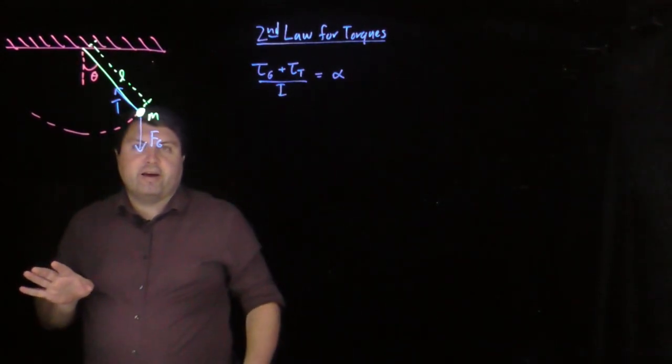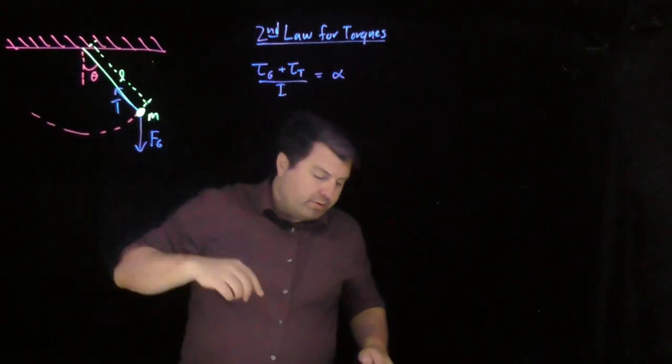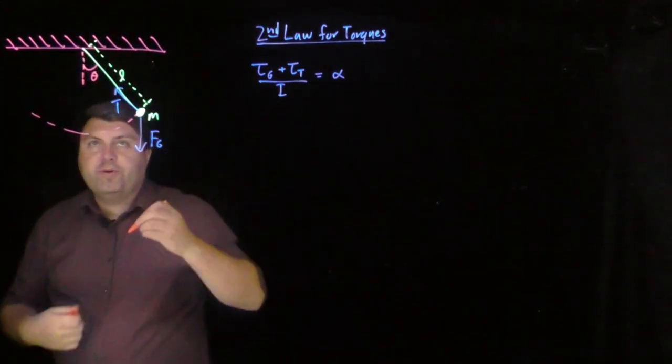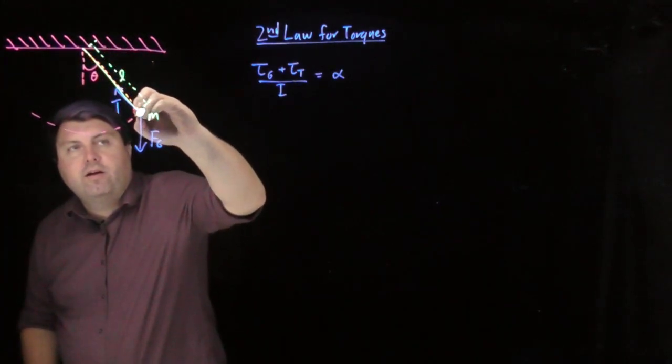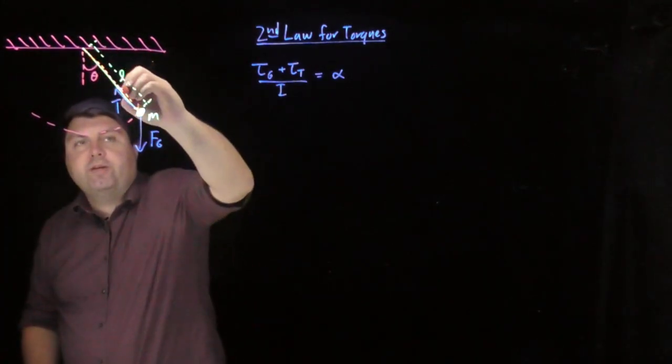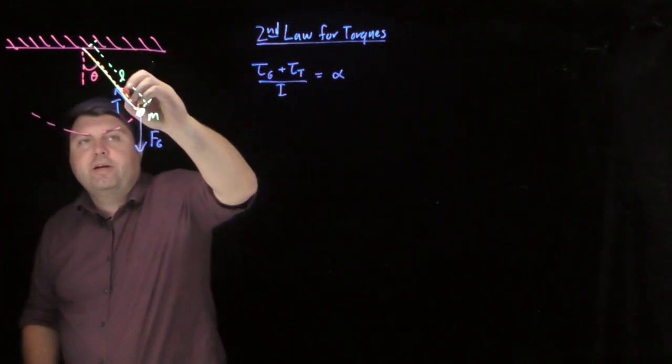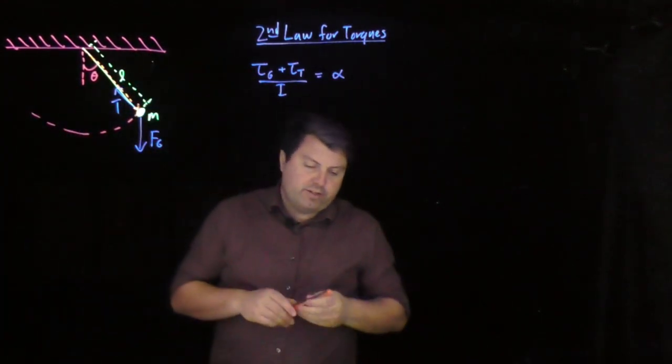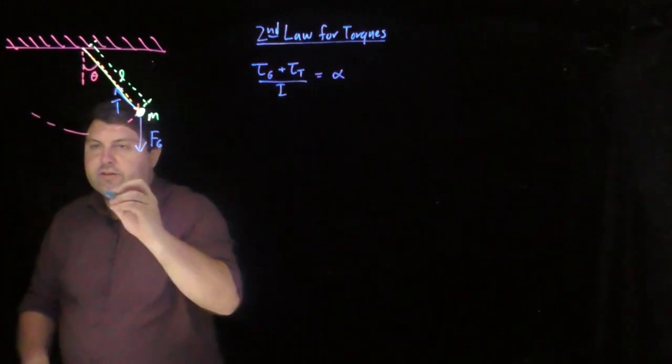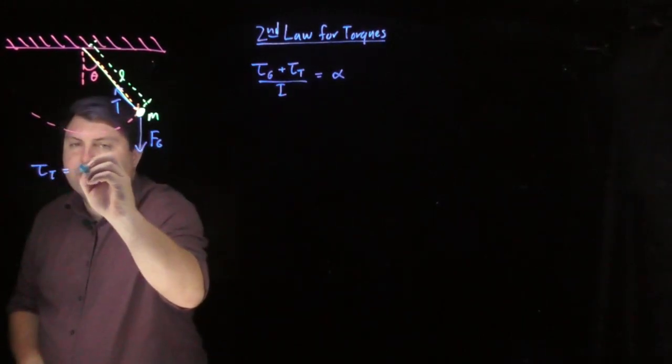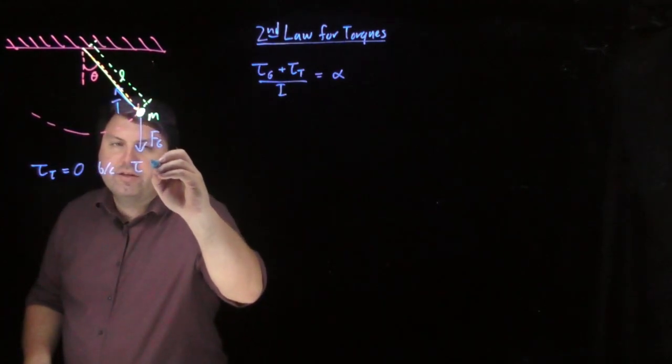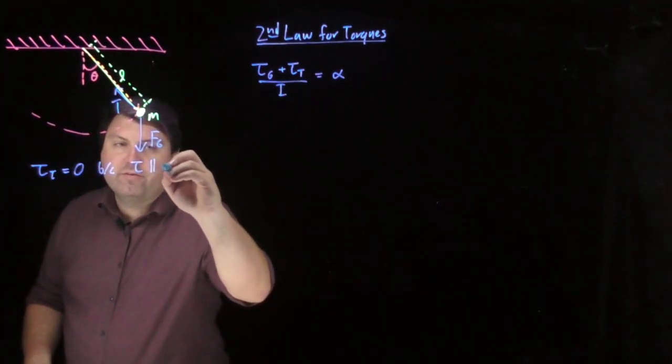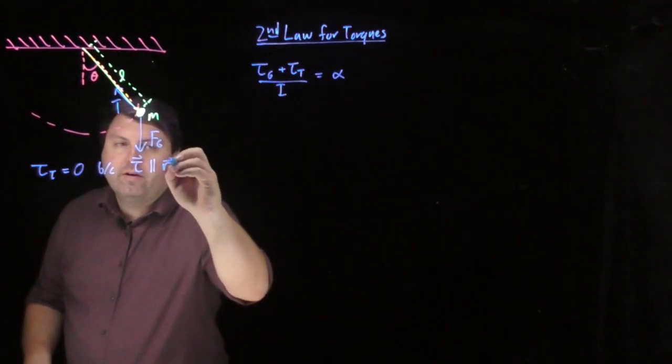Our tension, the torque from our tension is going to be zero because our radius R from this point to here is in the exact opposite direction as our tension. So the torque from our tension is zero because our tension is anti-parallel to our radius.